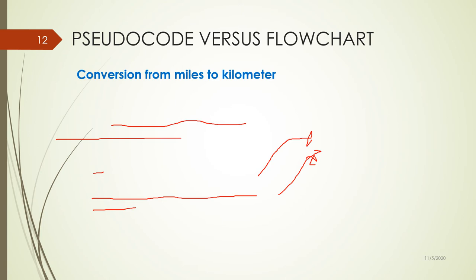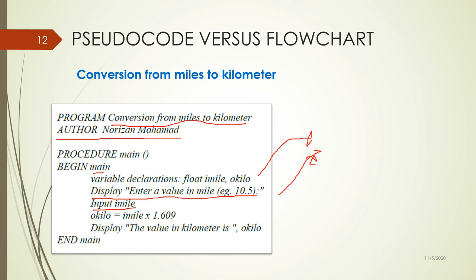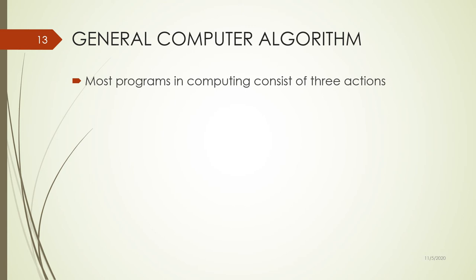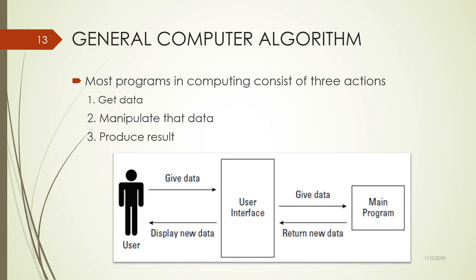The task is to convert from miles to kilometers — pseudocode versus flowchart. For pseudocode, you write the name and the author's name. Commonly, most programs in computing consist of three actions: input data, process data, and output. Normally, the user gives data, you do something with the data, and then the program displays information to the user — that is the produced result.